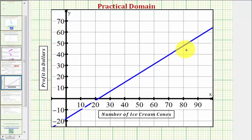If we ignore the context of the situation, because the graph moves left and right without any holes or breaks, the domain would be all real numbers. And because the graph moves down and up indefinitely without any holes or breaks, the range would also be all real numbers. But because of the context of the situation, this would not be the practical domain and practical range.